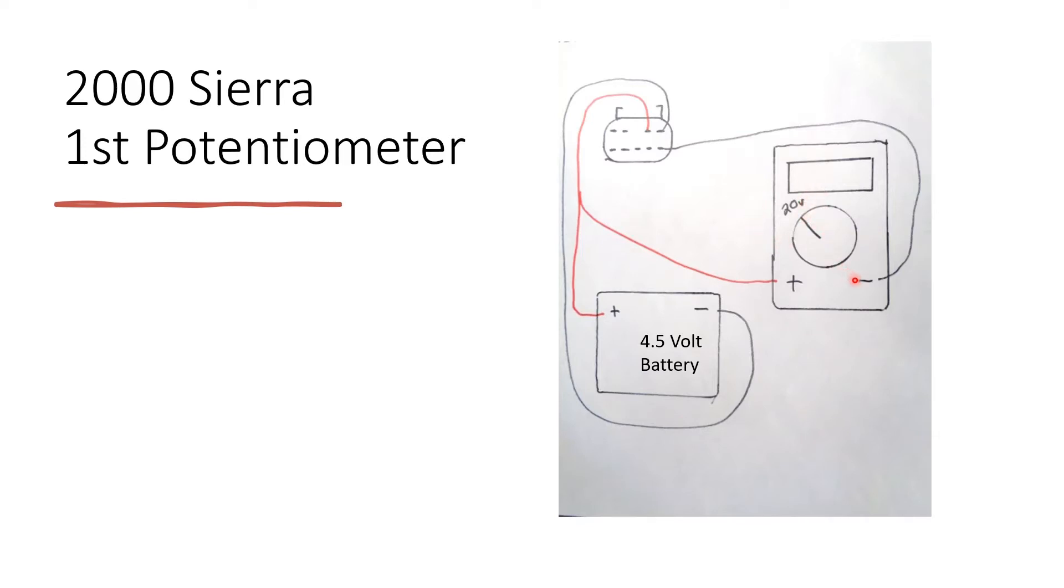You're going to connect the negative from the multimeter to this bottom right pin like this. You connect the negative from the battery to the top right pin just like this and then you connect the positive from both the battery and the multimeter to the second to the right top pin.